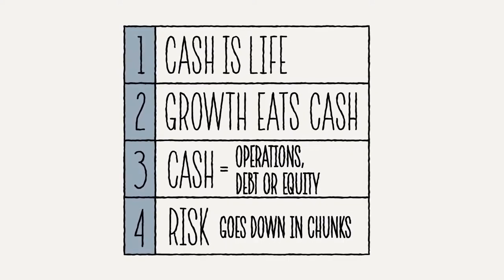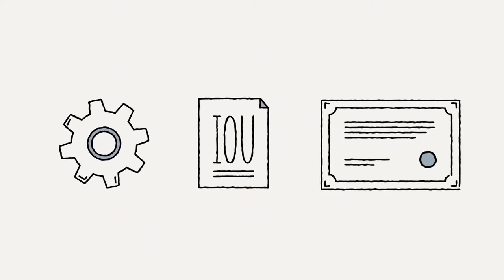Cash only comes from three places: operations, debt, or equity. And risk goes down in chunks.